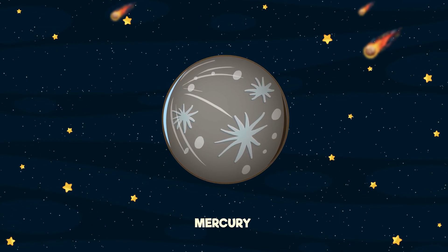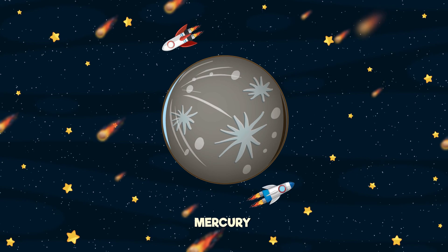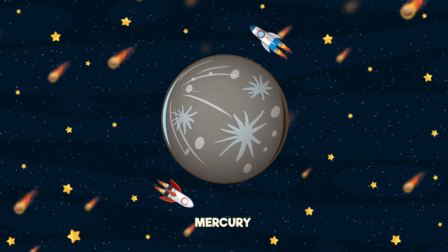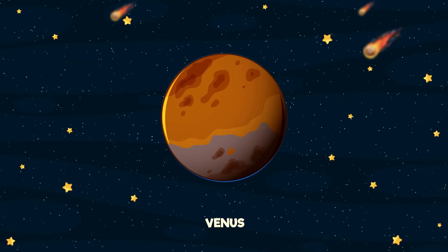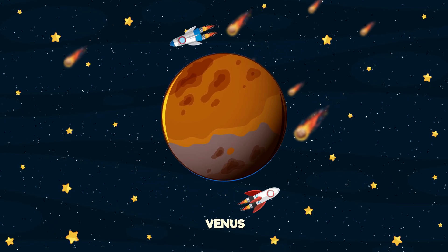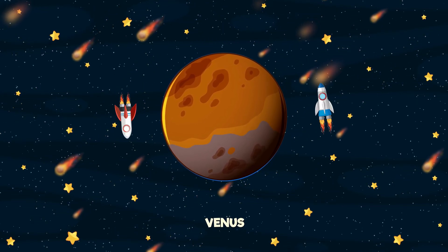Mercury's speedy, the smallest in sight, zoom around the sun, what a speedy flight. No air, no moon, just craters galore, hot in the day but at night it's cold for sure. Venus is shiny like a star in the night, but don't be fooled, it's a poisonous sight.